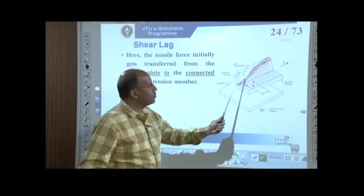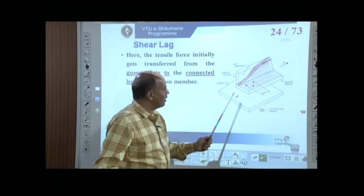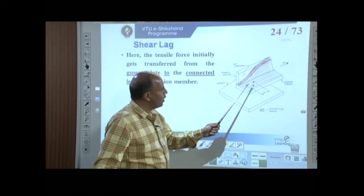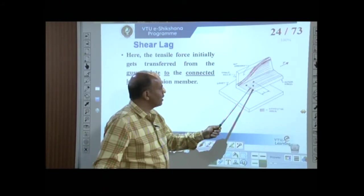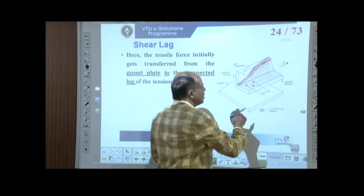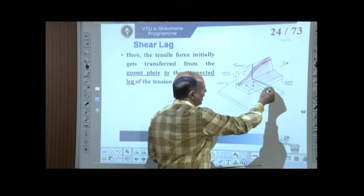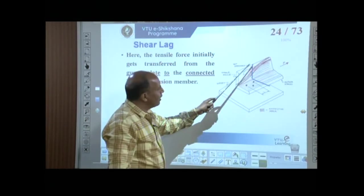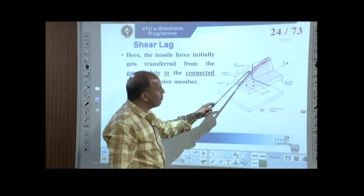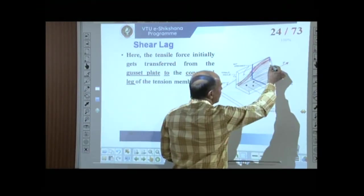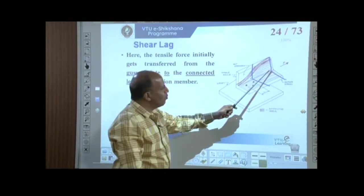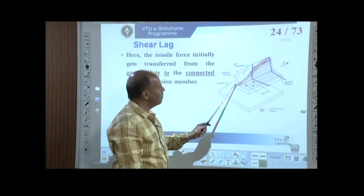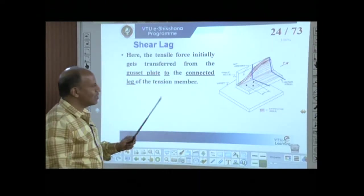Looking at various cross sections along the member: close to the end connection, the connected leg carries all the stress while part of the outstanding leg carries none. The force P gets transferred from the gusset to the connected leg through the bolts. After some distance L from the connection, the force gradually transfers to the outstanding leg as well, and the entire cross section carries uniform stress. That distance is called the transition zone.